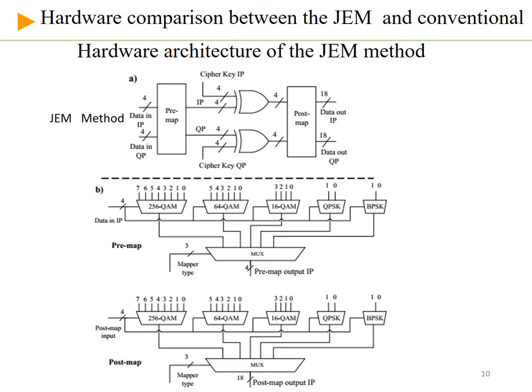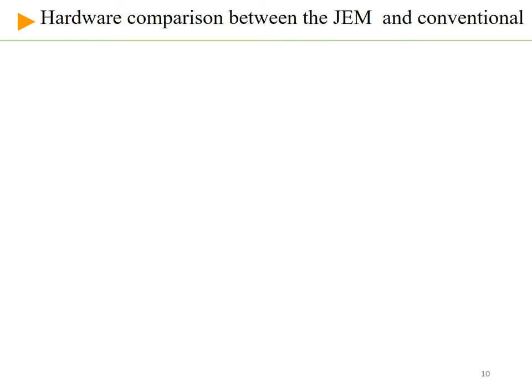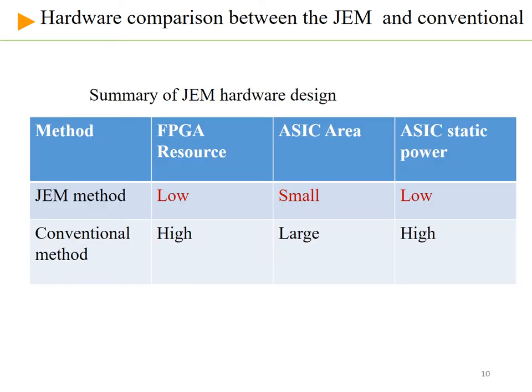The hardware architecture of the GAM method consists of only multiplexers and XOR operations. Hardware synthesis on the FPGA and ASIC shows that our proposed method consumes low FPGA resources, ASIC area, and power compared with the conventional method.